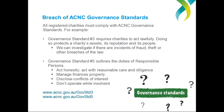Governance Standard 3 requires charities to act lawfully. Even without governance standard three, your organisation would be compelled to operate within the law. But the standard states it explicitly to ensure charity assets, reputations and people are protected. The ACNC can and will investigate if there are incidents of fraud, theft or other breaches of the law. Governance Standard 5 is also a biggie — it outlines the duties of responsible persons. There are seven of them and we've listed a few on the slide. Mel, did you want to go through some of them for us?